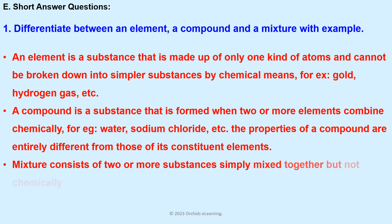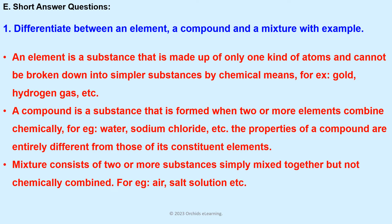A compound is a substance that is formed when two or more elements combine chemically. For example, water, sodium chloride, etc. The properties of a compound are entirely different from those of its constituent elements. A mixture consists of two or more substances simply mixed together but not chemically combined. For example, air, salt solution, etc.